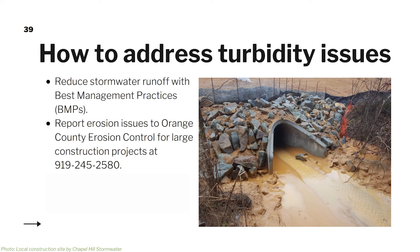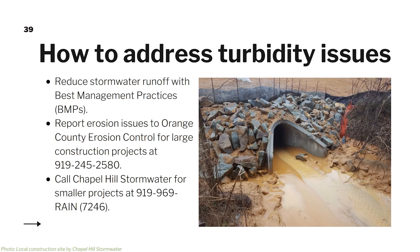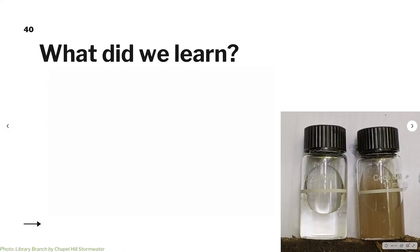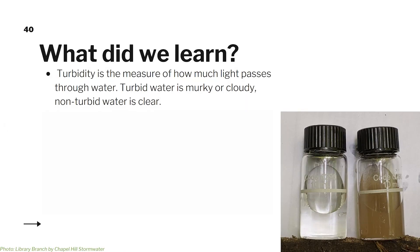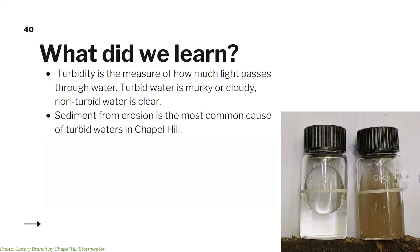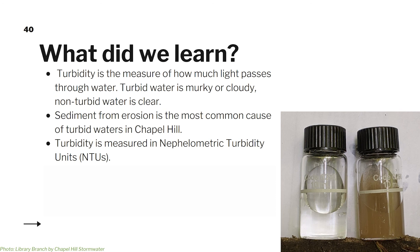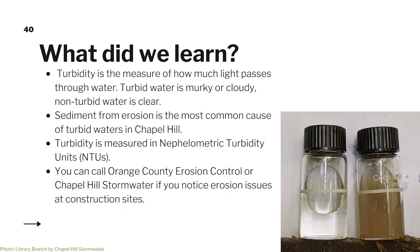If you notice erosion issues on large construction sites, you can call Orange County Erosion Control. If the site disturbs less than 20,000 square feet — for example, most residential lots — you can call Chapel Hill Stormwater. To summarize: turbidity is the measure of how much light passes through water; turbid water is murky or cloudy, and non-turbid water is clear. Sediment from erosion is the most common cause of turbid waters in Chapel Hill, and turbidity is measured in NTUs.